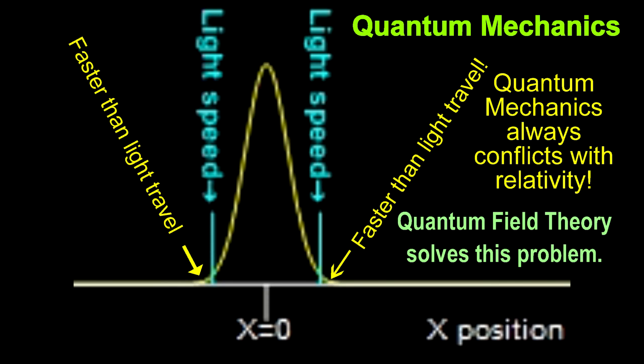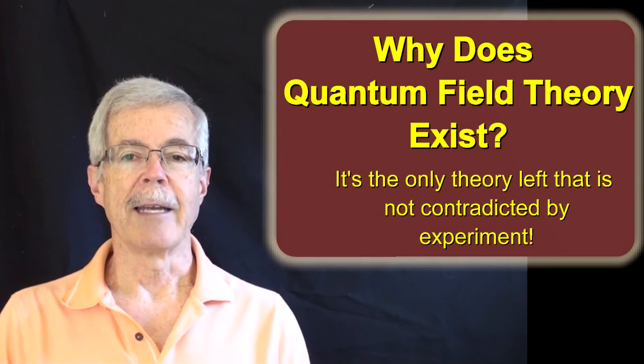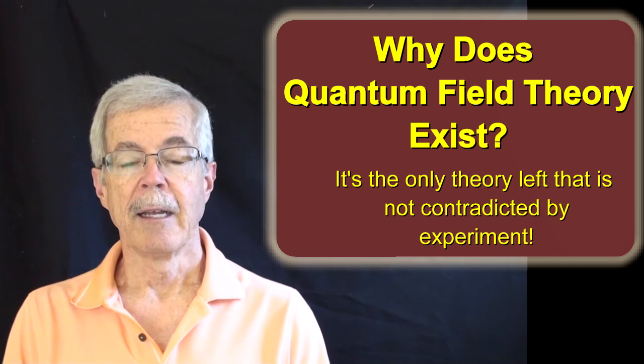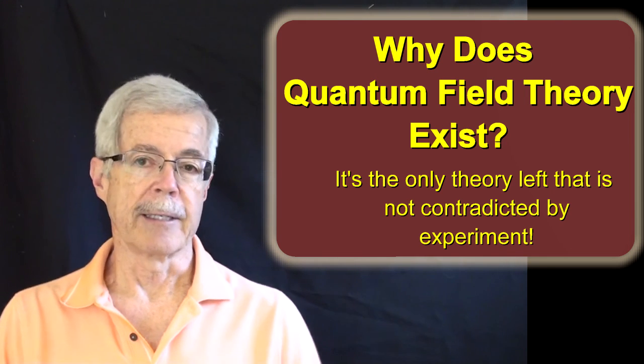Quantum field theory solves this problem because it allows negative frequencies while keeping energies positive. So the answer to our question, why does quantum field theory exist, is that it's the only theory left that isn't contradicted by experiment.